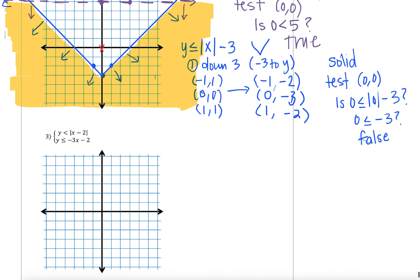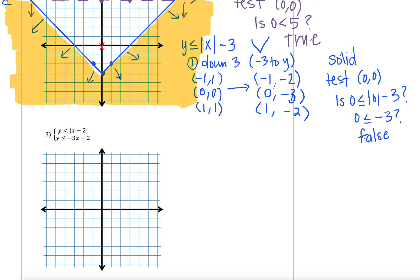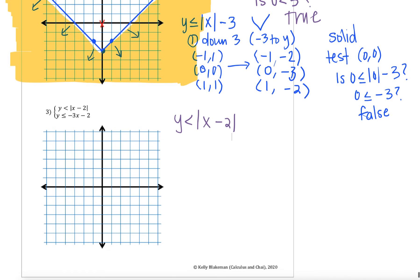Now let's look at our last example. We have y is less than the absolute value of x minus 2, and y is less than or equal to negative 3x minus 2. Pause the video and graph the first inequality. Think about whether the graph will be a straight line or v-shaped, whether the boundary line will be solid or dotted, and how the shading works.